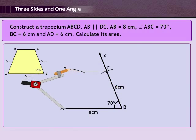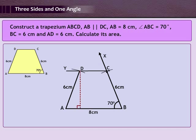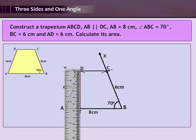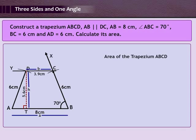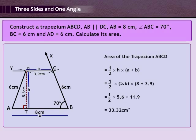Step 6: With A as centre and radius 6 cm, draw an arc cutting CY and mark its intersection as D. Step 7: Join AD. Thus ABCD is the required trapezium. Step 8: From D draw DT perpendicular to AB; DT equals H equals 5.6 cm, CD equals B equals 3.9 cm, and AB equals A equals 8 cm. Therefore area of trapezium ABCD equals half into H into A plus B, which gives 33.32 cm square.